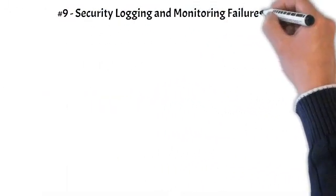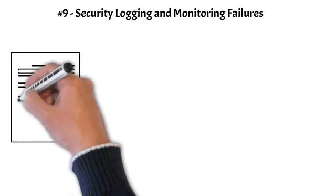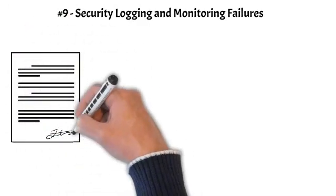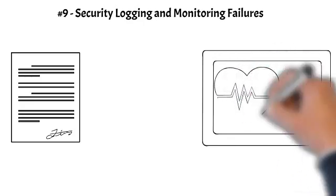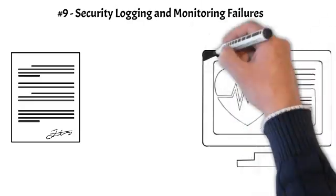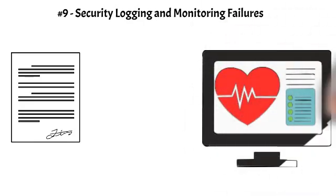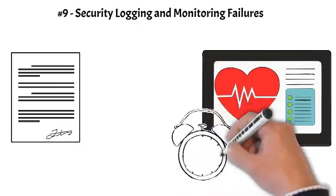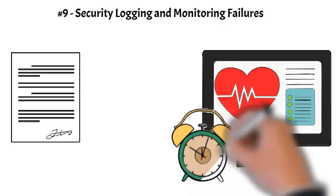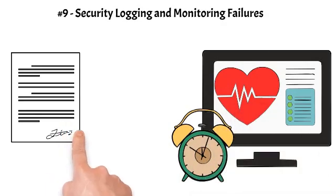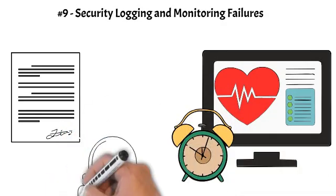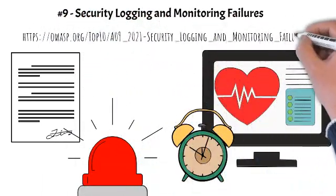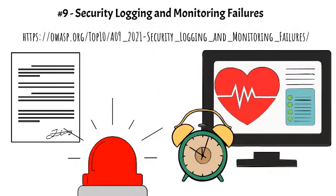Number 9: Security Logging and Monitoring Failures. Previously called insufficient logging and monitoring, added from the industry survey at number 3, moving up from number 10 previously. This category is expanded to include more types of failures, is challenging to test for, and isn't well represented in the CVE/CVSS data. However, failures in this category can directly impact visibility, incident alerting, and forensics.